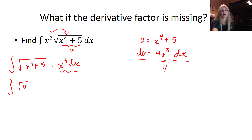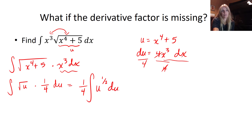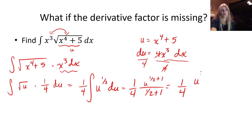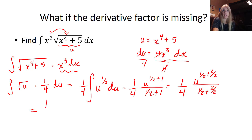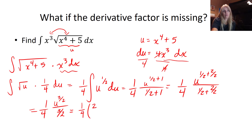My substitution is x to the fourth plus 5. What's left over kind of looks like what's left over here if I divide off the 4. So that looks exactly like what's left over. I put one fourth out front; this becomes one fourth times u to the one half du. The antiderivative is u to the one half plus one, over one half plus one — so one fourth times u to the three over two, over three over two.